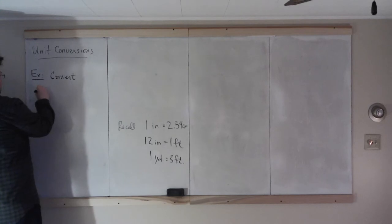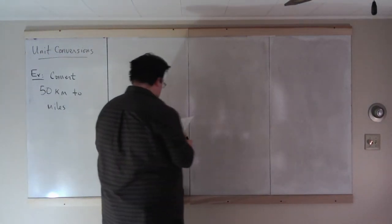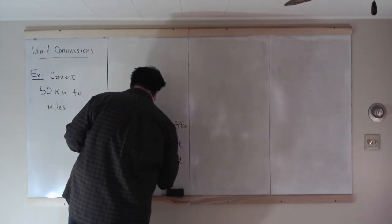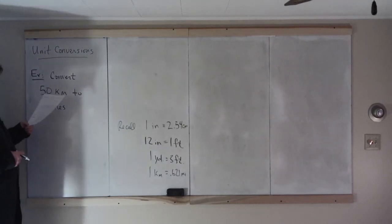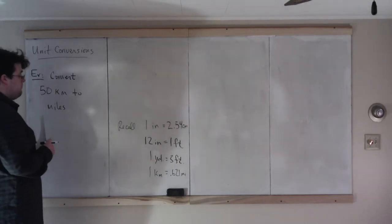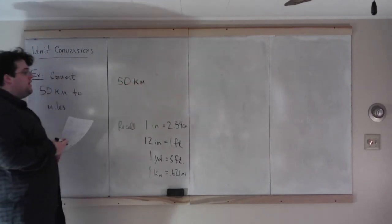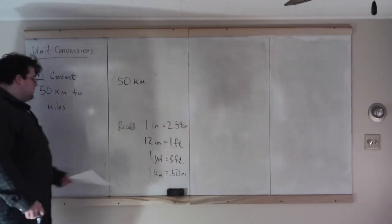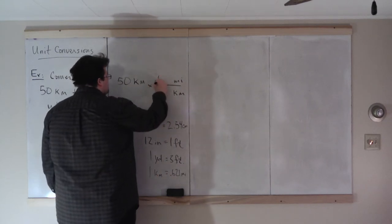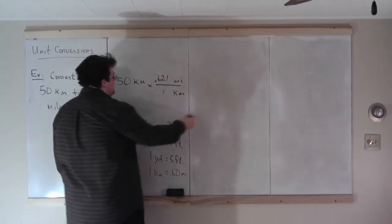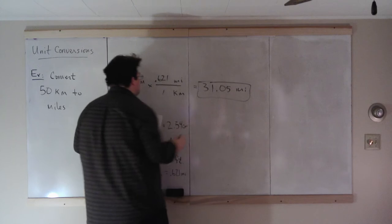Convert 50 kilometers to miles. I'll give you the conversion directly: one kilometer equals 0.621 miles. We need to cancel out kilometers, so we divide by kilometers and multiply by miles, giving 0.621 miles per one kilometer. 50 times 0.621 equals 31.05 miles. That one works out exactly.